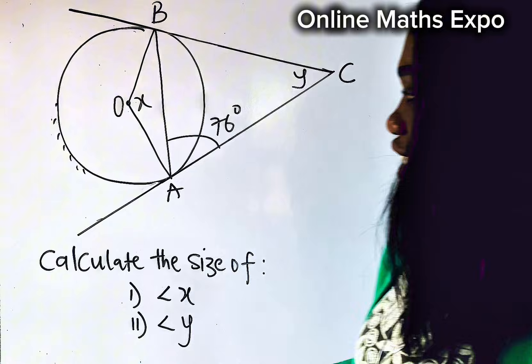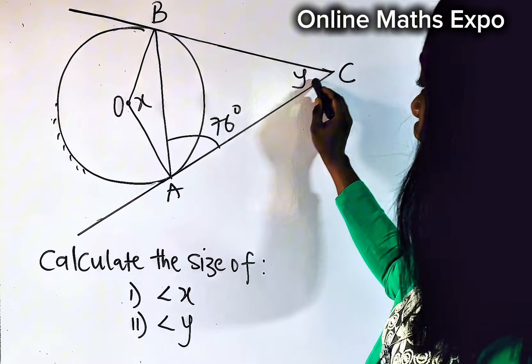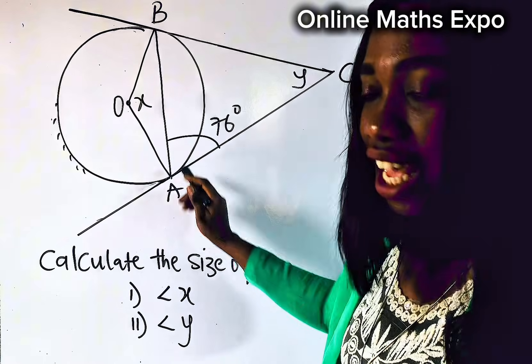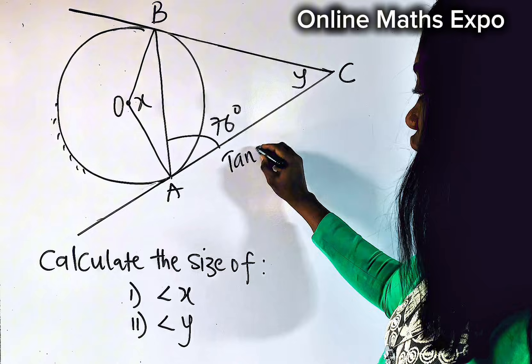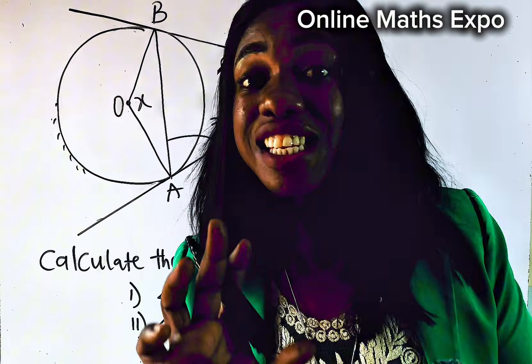Another thing to note is that you observe this line. You see that this is a straight line touching the circumference at a point and this straight line is what we call the tangent. Now if this is a tangent, does it help us in answering this? Yes.